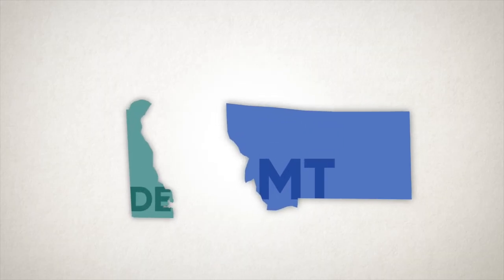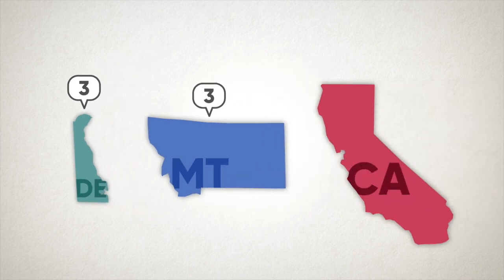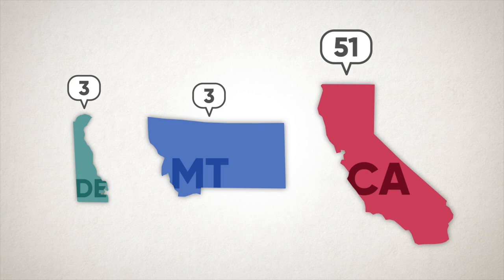Every state starts with two votes for their two senators and at least one representative in the House — that's a standard. But they can also have more representatives depending on their population. Our least populated states, like Delaware and Montana, where there's only one congressperson for the entire state, get the minimum of three electoral votes. Larger states with a lot more citizens get a lot more electoral votes, with California leading the pack at 55.